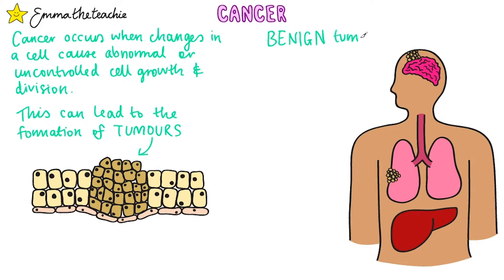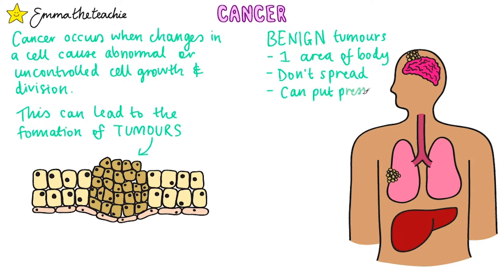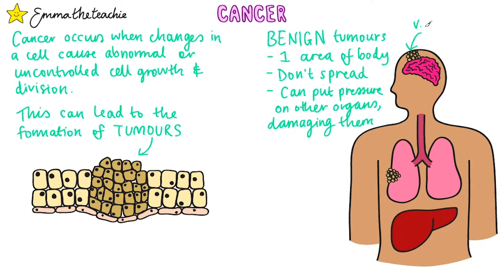Benign tumours are contained in one area of the body, usually within a membrane. They don't spread to other parts of the body. However, they can still be dangerous as they grow very quickly and can put pressure on other organs, which damages them. For example, tumours in the brain have nowhere else to grow as the skull surrounds them, so they can put pressure on the brain, which is very dangerous. So these types of tumours can still be life-threatening.